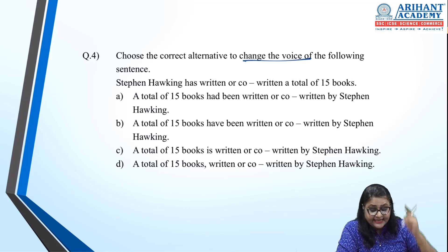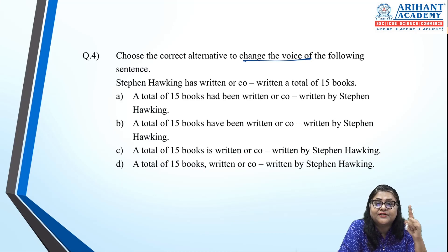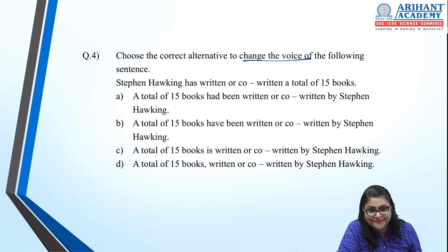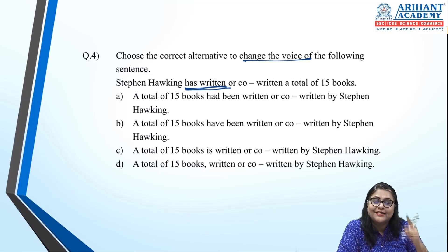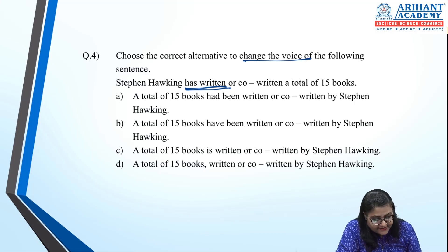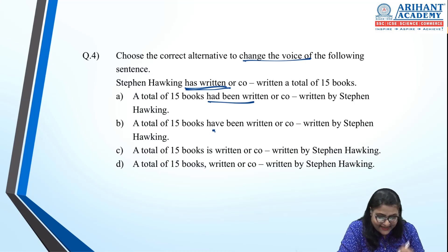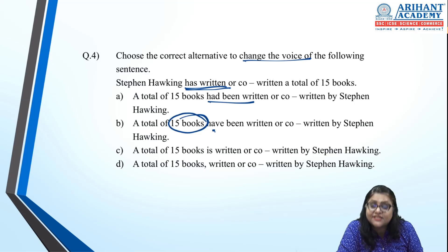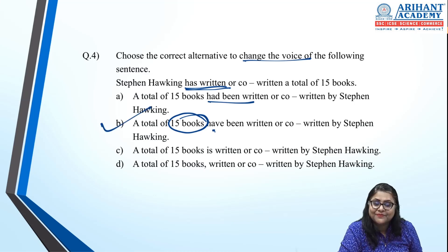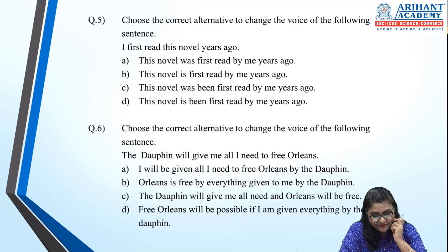Next: 'Stephen Hawking has written or co-written a total of 15 books.' Present perfect — passive also must be present perfect. 'A total of 15 books' is plural, so 'have been written' is correct, not 'has been written.'